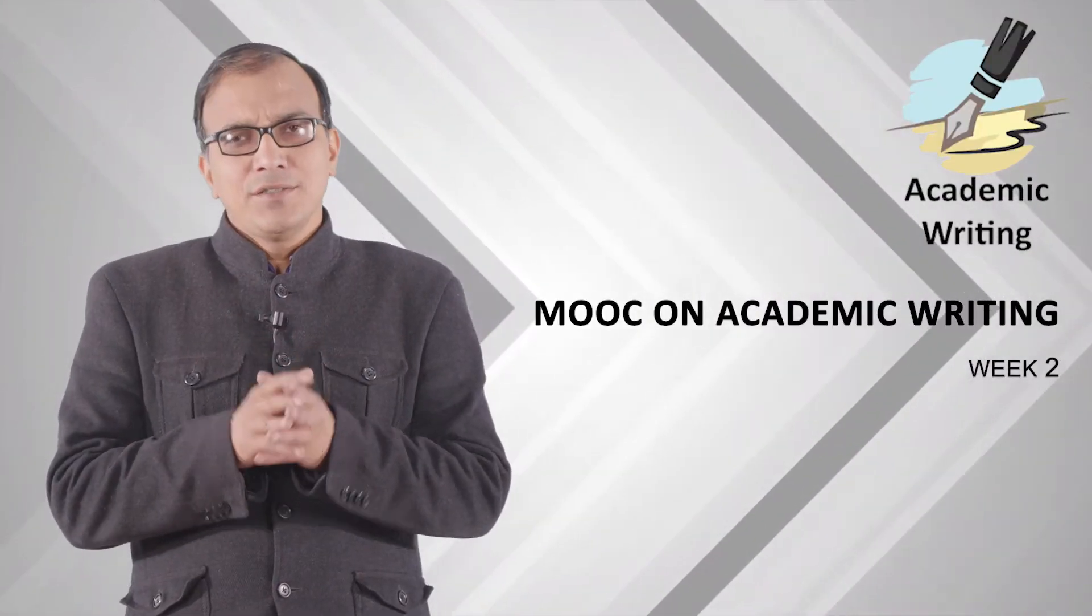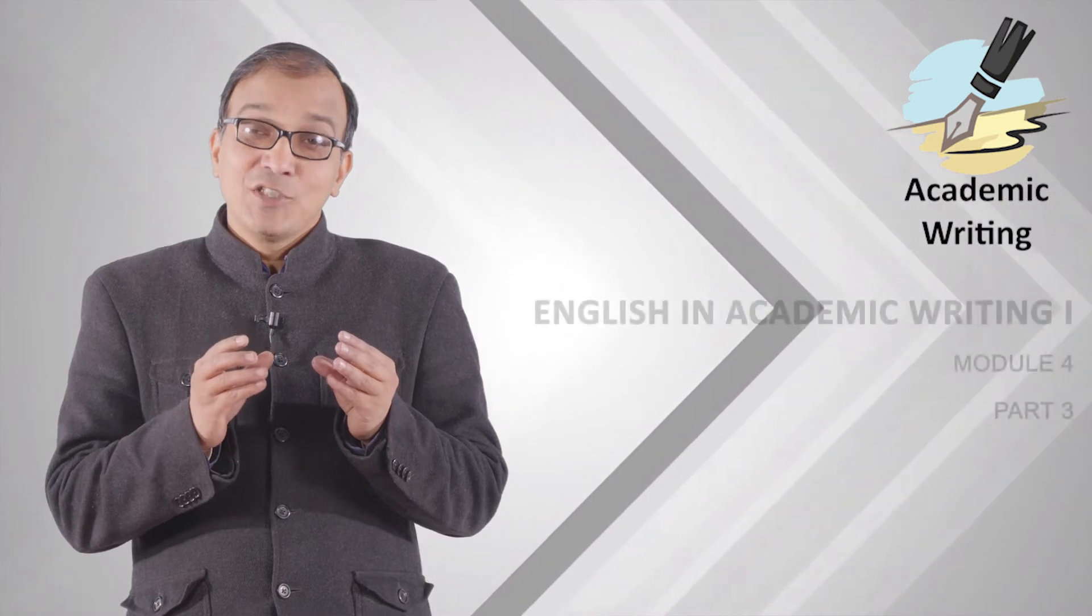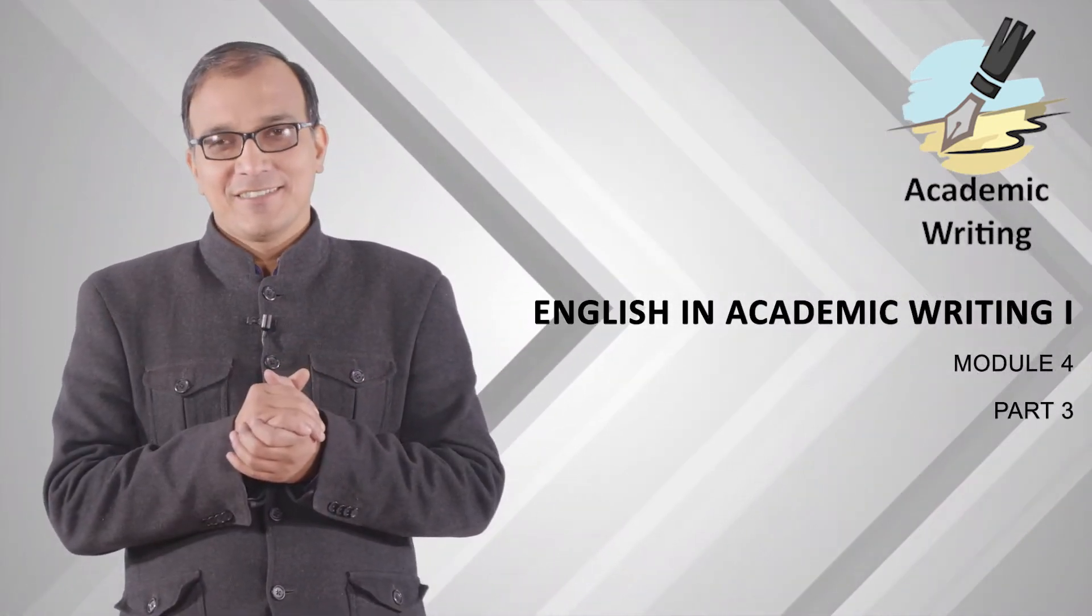In this lecture, we will be discussing the judicious use of articles. We know very well what the articles are: a, an, and the. These are the three articles—indefinite articles and the definite article. There are two types of articles. We naturally use the indefinite articles without any mistake. When we are using the indefinite articles, we use them very comfortably and most of the times without any error.